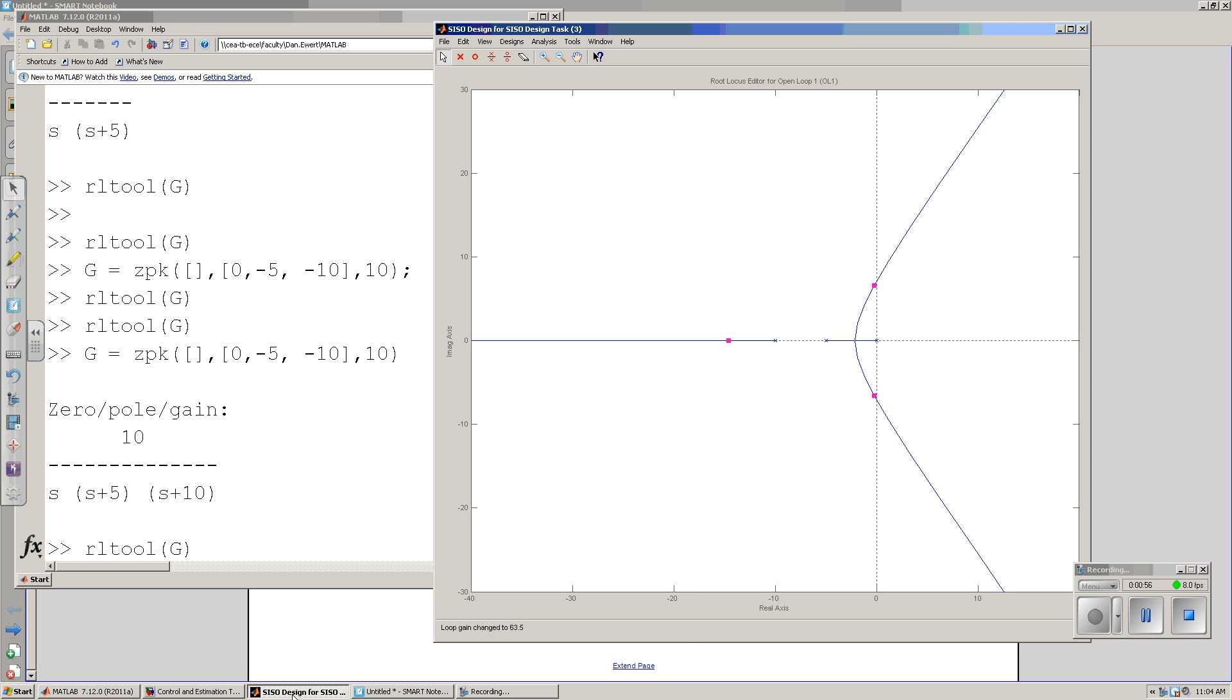And I can sit there and move a spot around and say, suppose I want my roots to be right here, k should be 12.8. That's kind of neat.